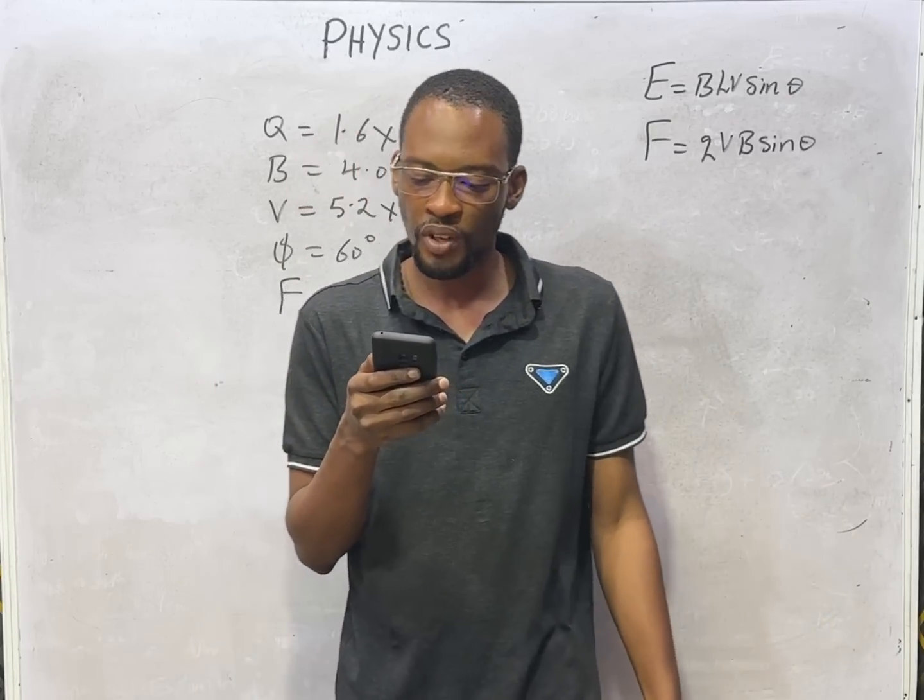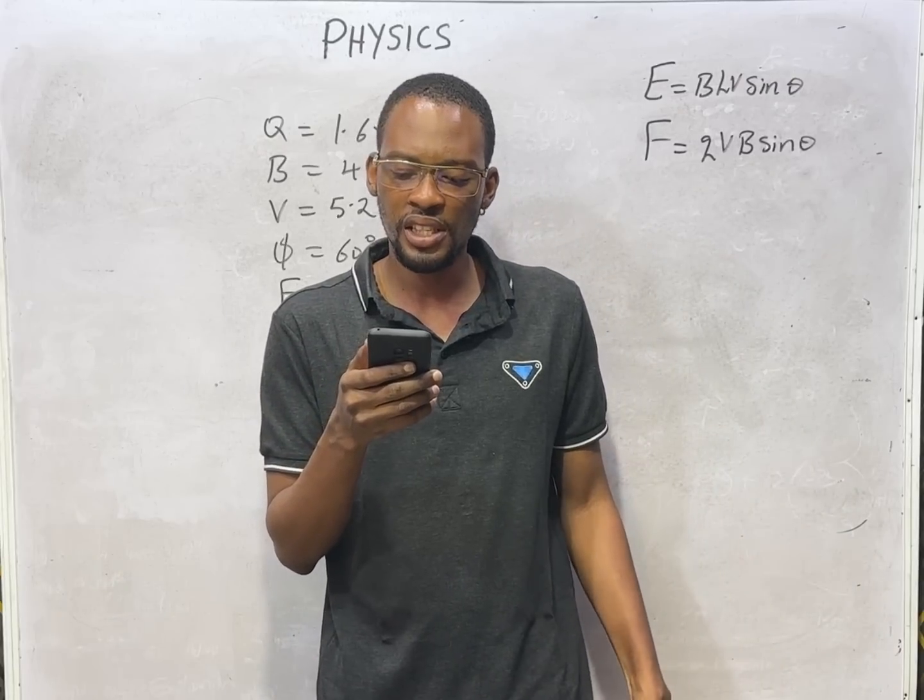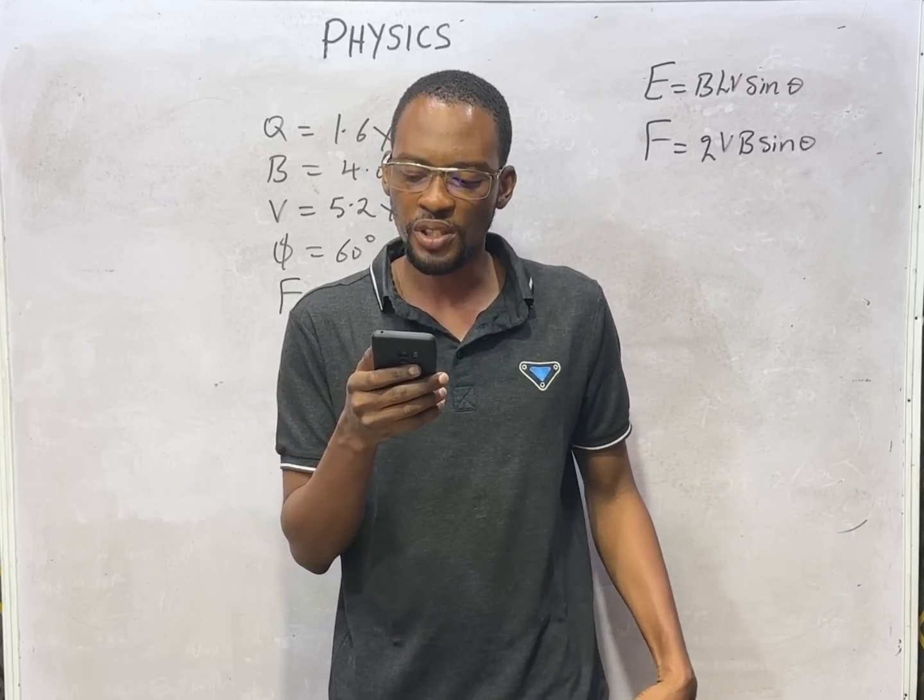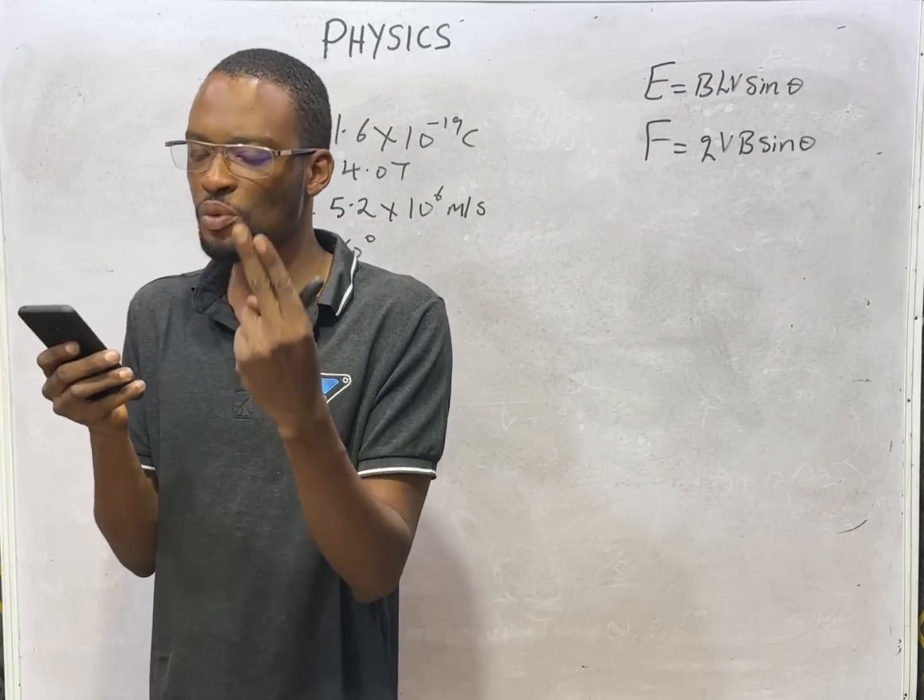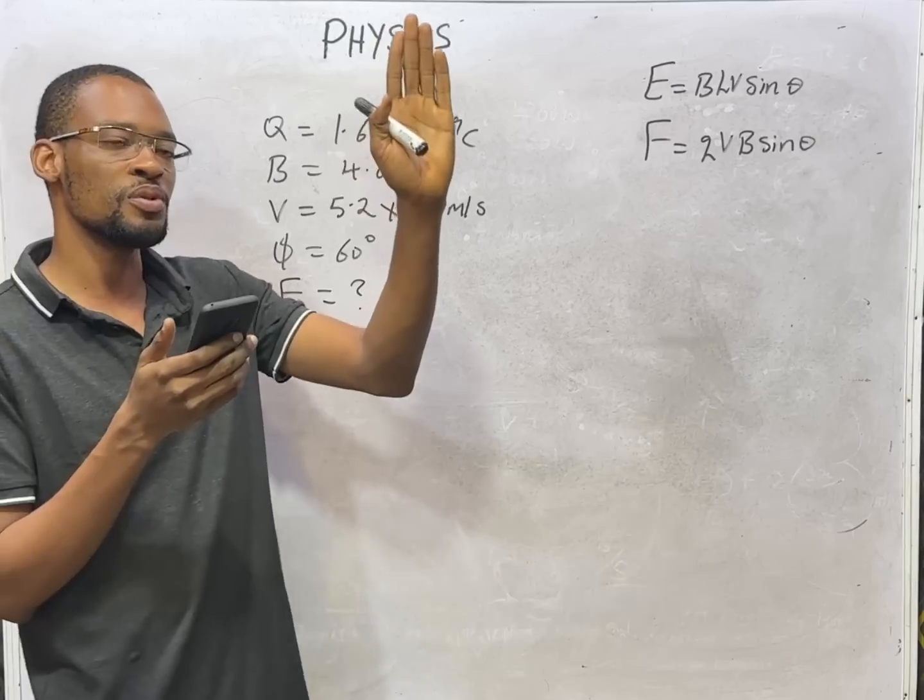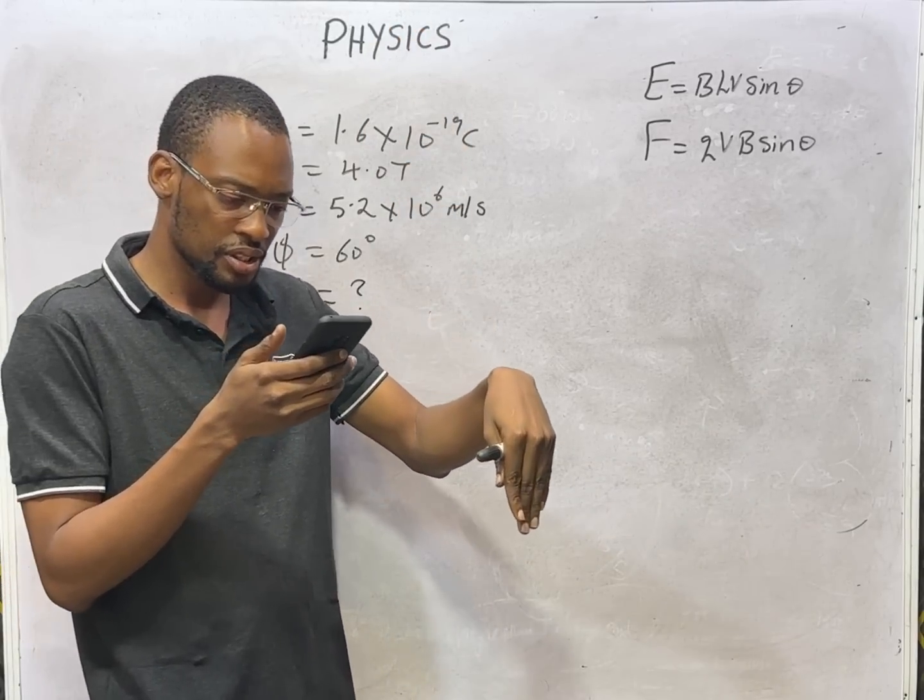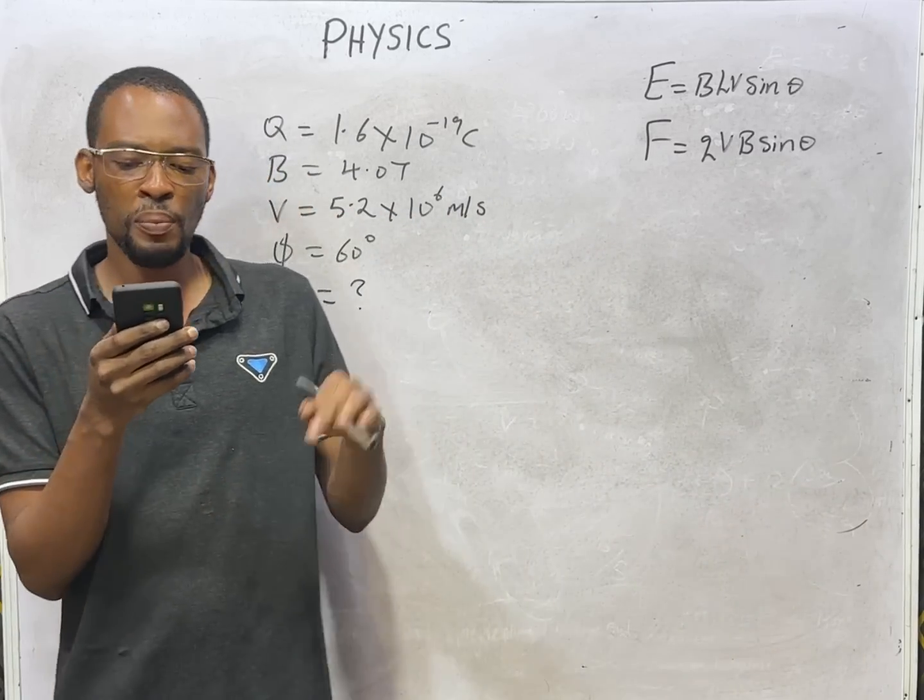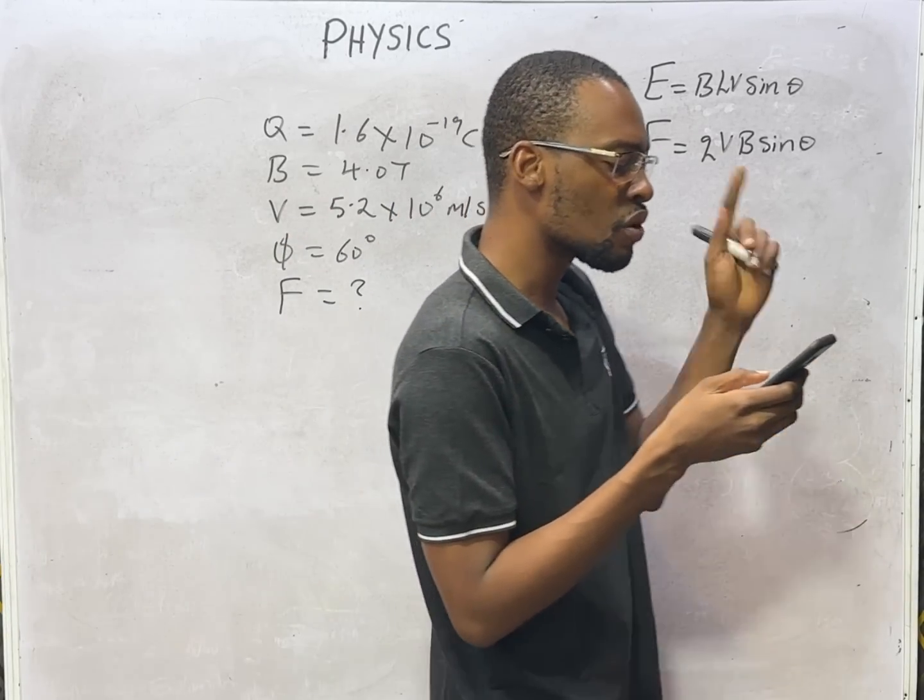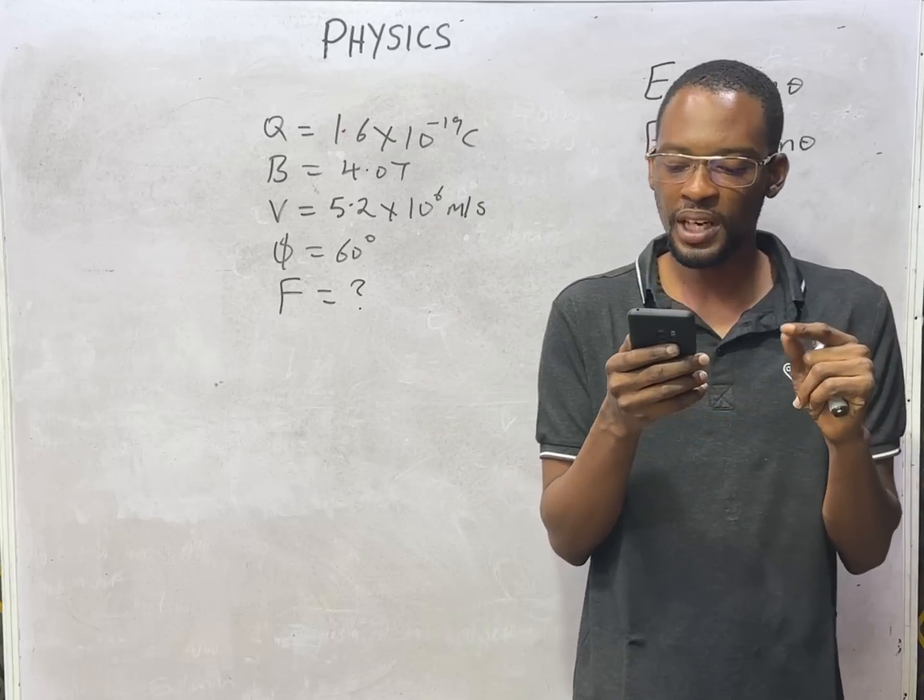The main purpose of transformer in the AC radio set is to step up the voltage. Transformer serves two main purposes: either to step up voltage or to step down voltage. Stepping up voltage is when the voltage is not enough, so you need to raise the voltage. If the voltage is too high, you use the step down transformer. For this AC radio set, the purpose is to step down the voltage.